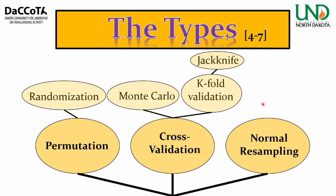Under normal resampling, the main method is the bootstrap. It estimates sample distribution, using sampling with replacement to establish confidence intervals among other things. A good comparison: jackknife is fairly small, handy, and conceptually simple, whereas bootstrap can be a much bigger workshop full of tools to use on prediction or confidence estimation.